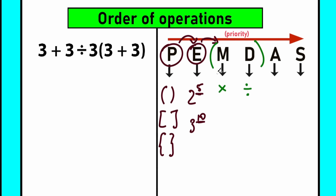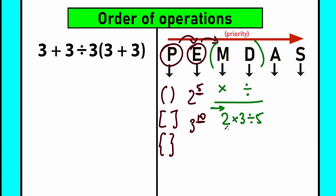Don't be scared about multiplication and division being one group. A lot of students think M comes first from left to right, so multiplication before division — or in BODMAS, D comes before M. Here's the key: multiplication and division in 98% of cases have the same priority. So when we have, for example, 2 times 3 divided by 5, we don't do multiplication first just because M appears before D. We need to scan from left to right and perform whichever sign appears first.